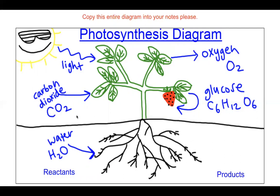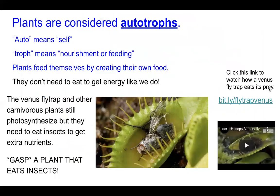Here we have the chemical formulas: H2O you already know, CO2 you're experts on, oxygen is O2, and glucose is this fancy chemical formula C6H12O6 — it's a long chain of carbons, hydrogens, and oxygens all stuck together. We also asked you to watch a cool Venus flytrap video.